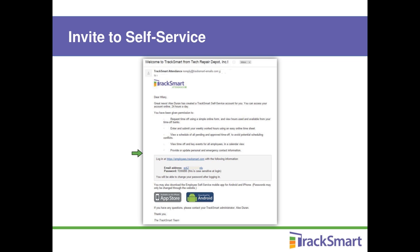The invitation email also gives employees a link to log in, because employees don't log in at the same place as the Track Smart administrator. Employees and supervisors log in at employees.tracksmart.com. They'll also get links in that email to download the employee mobile app. Here's a tip: give employees permission to view the company calendar — this helps them avoid requesting time off on a day when someone else who would need to cover for them is already out. Note that personal details such as the reason for an absence are hidden from employees to protect privacy.